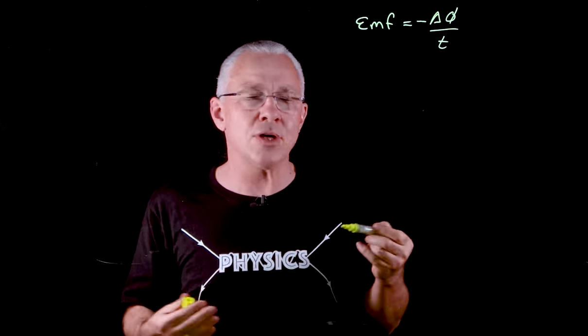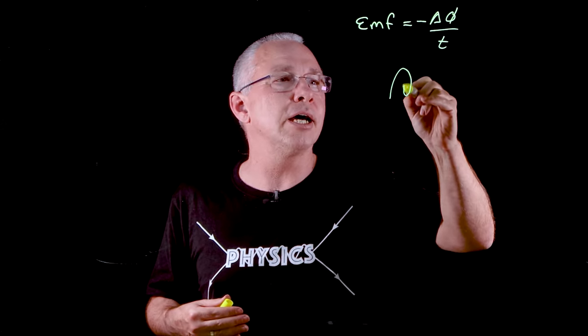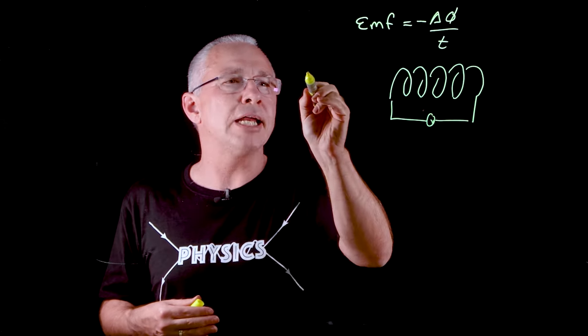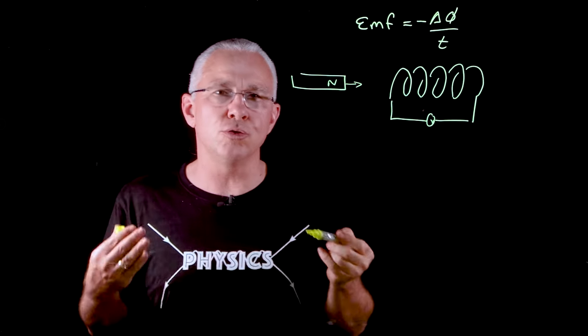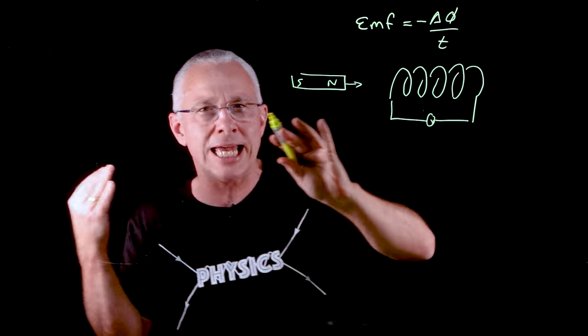One way we can describe this is using a coil. Let's say I have a coil like this and I'm going to connect this to a voltmeter. I insert a north pole and push that into the coil. We have a magnetic field around my bar magnet that's going to enter the coil, which results in an emf being generated.